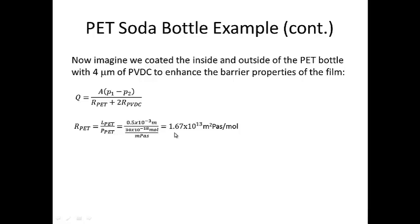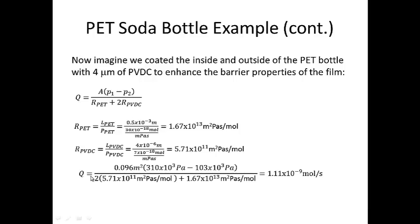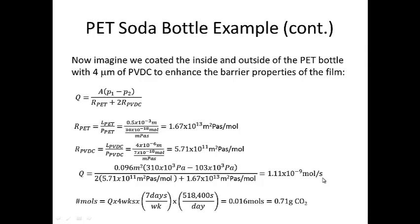I can calculate the resistance of the PET bottle by taking the thickness of the PET — 0.5 millimeters — and dividing it by the permeability of PET, to get a resistance of 1.67 times 10 to the 13th meters squared Pascal seconds per mole. The resistance of the PVDC is calculated in a similar fashion, assuming four microns of PVDC and a permeability of PVDC of 7 times 10 to the negative 18th moles per meter Pascal second. So I arrive at 5.71 times 10 to the 11th meters squared Pascal seconds per mole for the resistance of PVDC. Plugging these numbers into our equation, we arrive at a total mass flow rate of 1.11 times 10 to the minus 9th moles per second, and converting that into grams of CO2 by multiplying by four weeks, I get 0.71 grams of CO2.